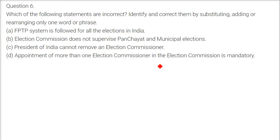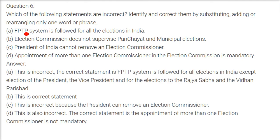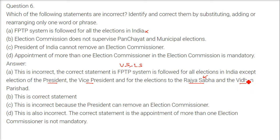Which of the following statements are incorrect? First: FPTP system is followed for all elections in India — this is incorrect. FPTP is followed for Vidhan Sabha and Lok Sabha elections. But for the election of the President, Vice President, Rajya Sabha members, and Vidhan Parishad, the PR system — proportional representation — is used.